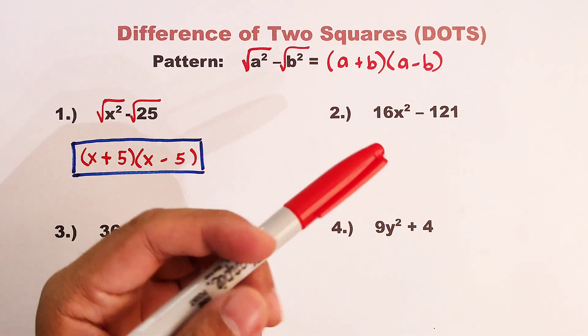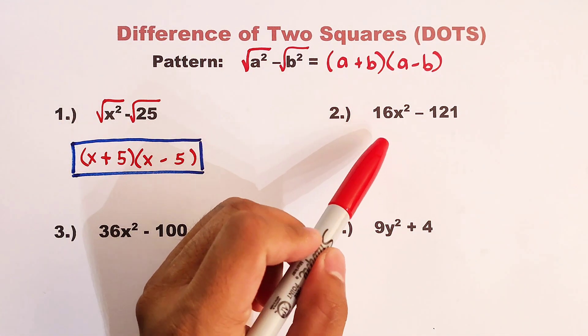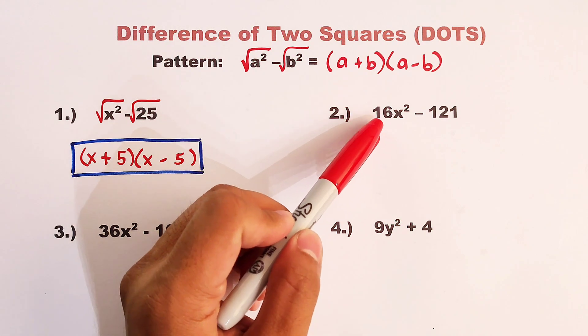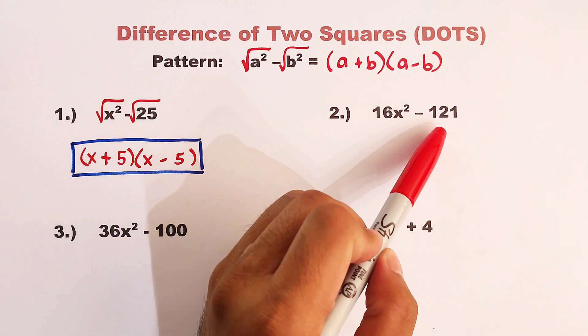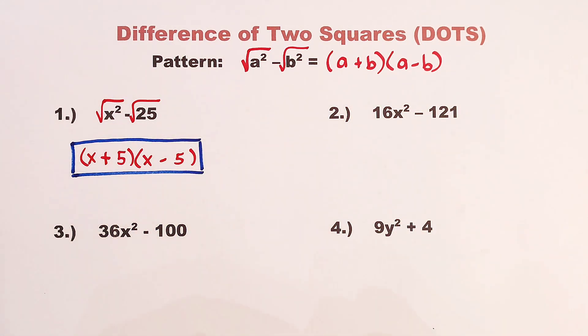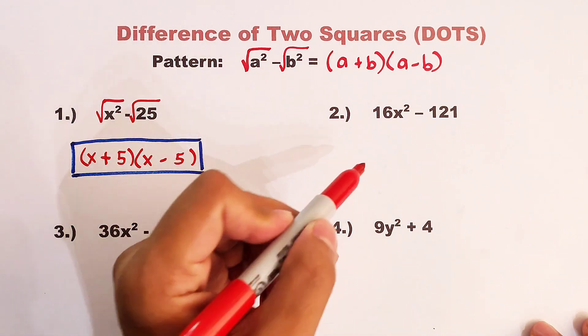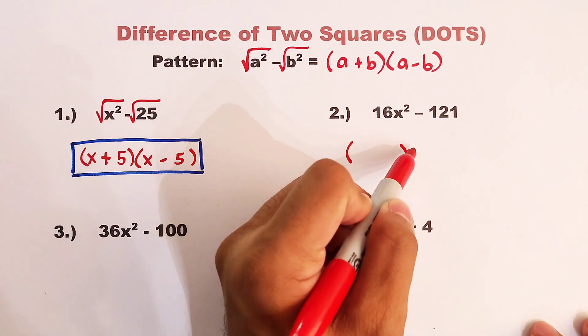Now, let's move on with item number two. For number two, the first term is a perfect square. We have 16x squared minus 121, is also a perfect square. So definitely we can use the pattern. So we have these parentheses.